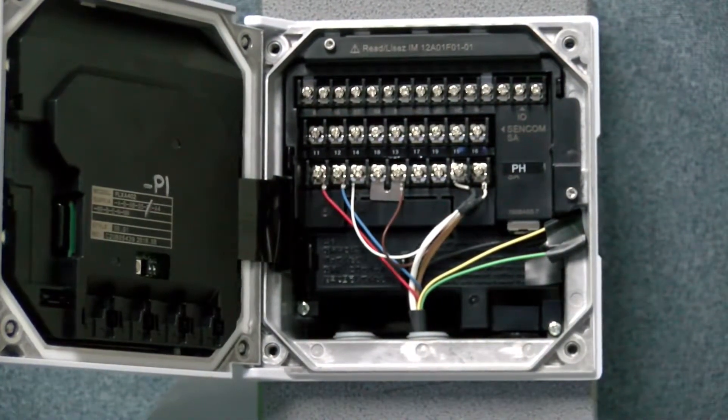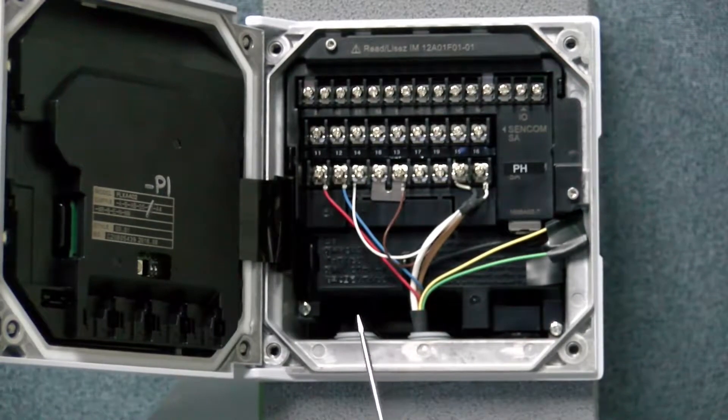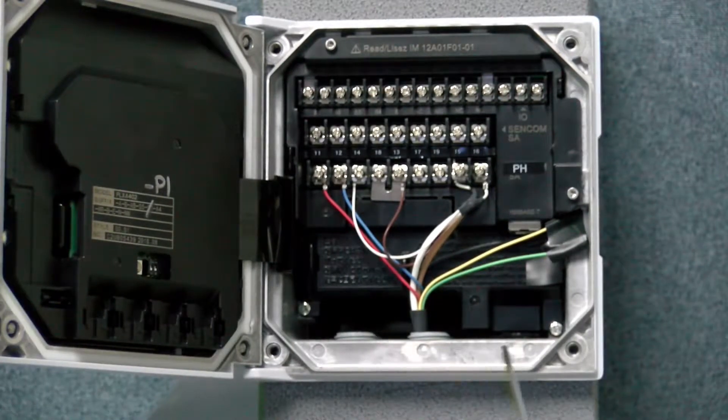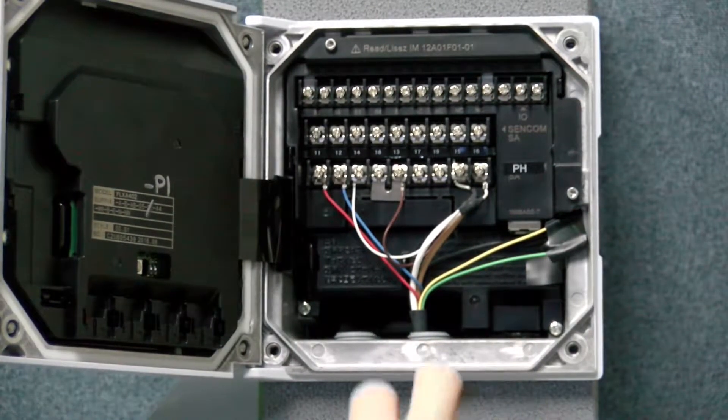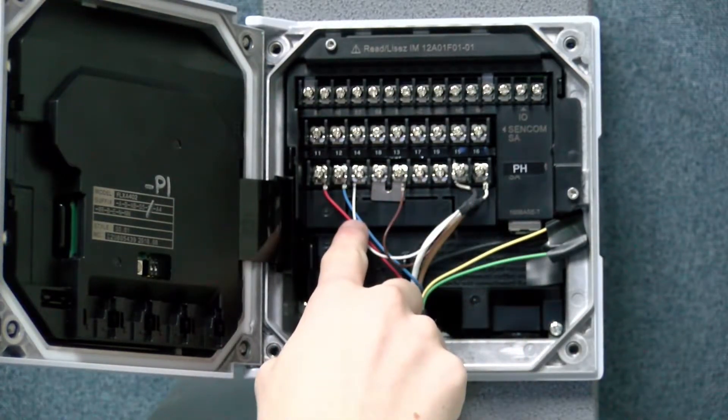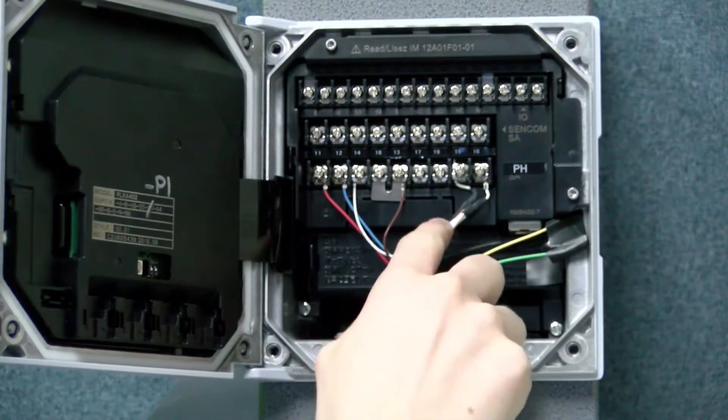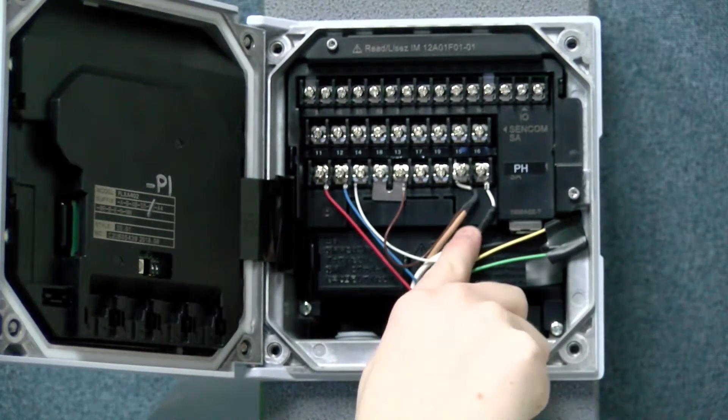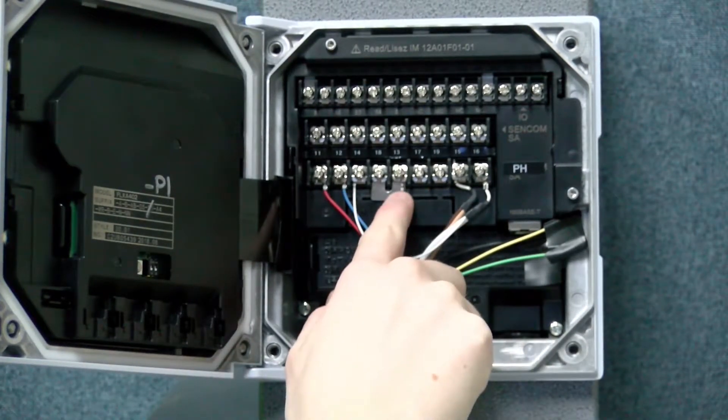So just a quick run through. You're going to have the red on 11, the blue on 12, and then the white wire, the large end on 16 and the smaller end on 14. And for the brown wire, you're going to have the large end on 15 and the smaller end on 13.